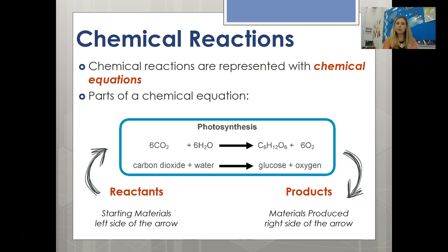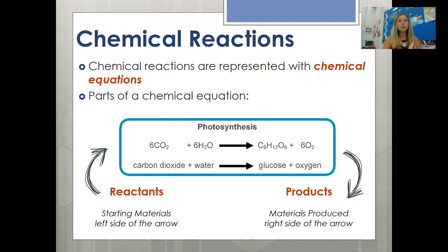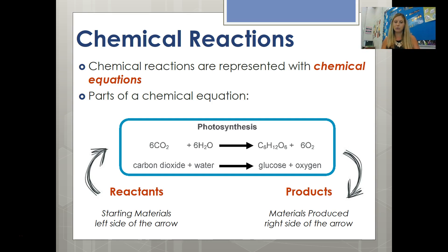Now that we've talked about chemical versus physical change, we're going to focus on chemical reactions. Chemical reactions are represented with what we call chemical equations. On the left side of an arrow, you have the reactants — the starting materials that are reacting. Then you have the arrow sign, often called the yield, which represents the transformation or reaction process. On the right side of the arrow, you have the products — the materials being produced as a result of the reaction.